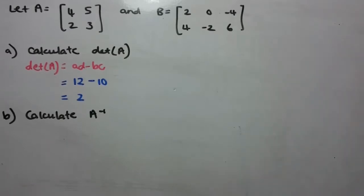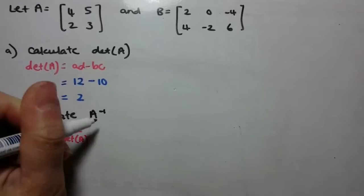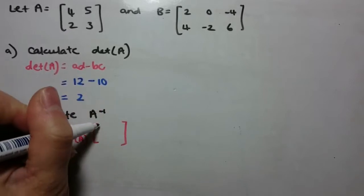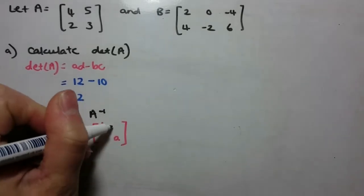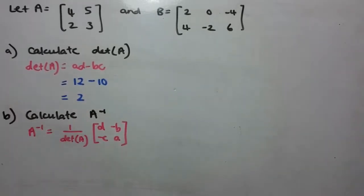So now what we want to do is we want to calculate the inverse. So A inverse is given by 1 on your determinant of A, multiplied by AD swapped, B and C become negative.